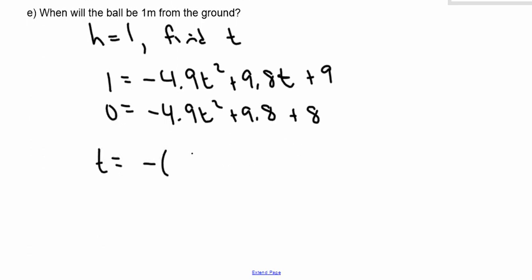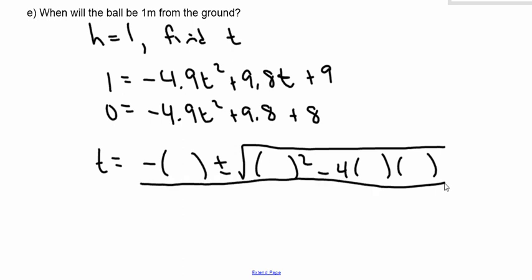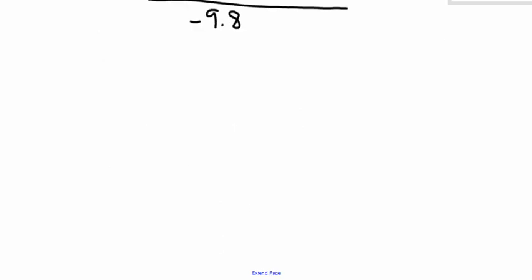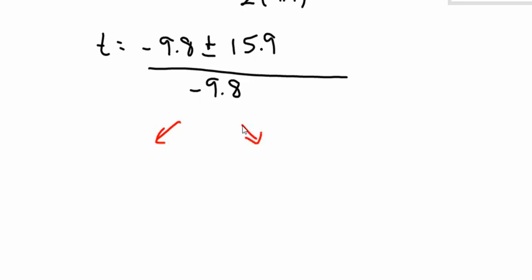t is equal to negative b plus or minus the square root of b squared minus 4 times a times c. And all of this is divided by 2a. So now it's just careful calculations. So t is negative 9.8. I'm not going to spend time here letting you wait for me to type stuff into my calculator. That's the whole root. So now I'm going to separate it into my two potential answers.